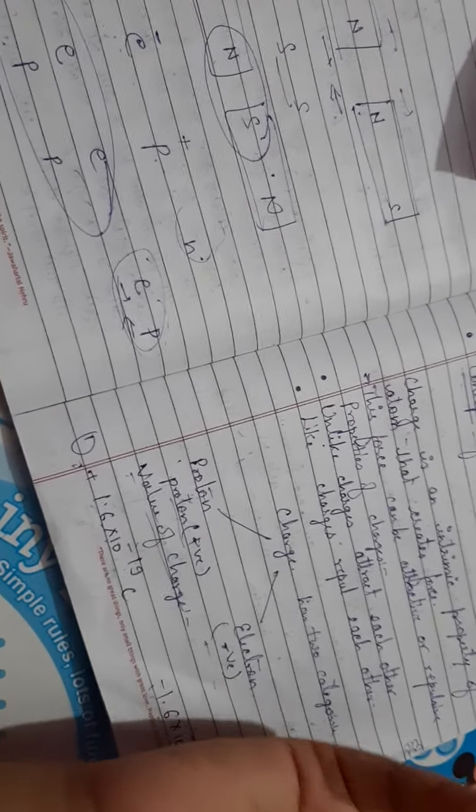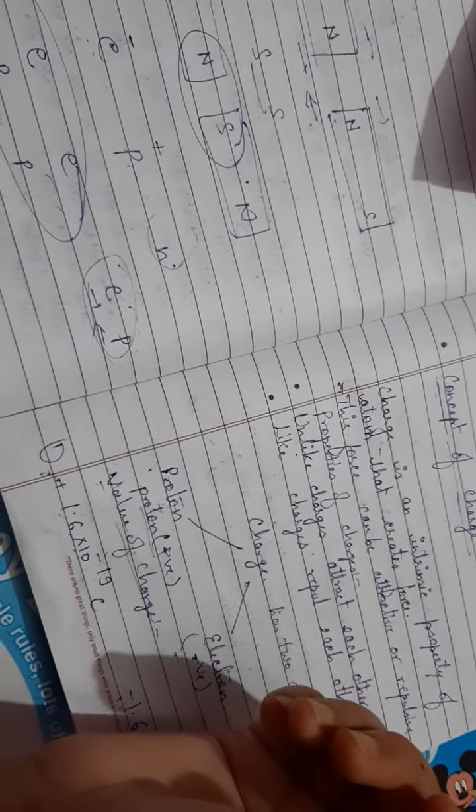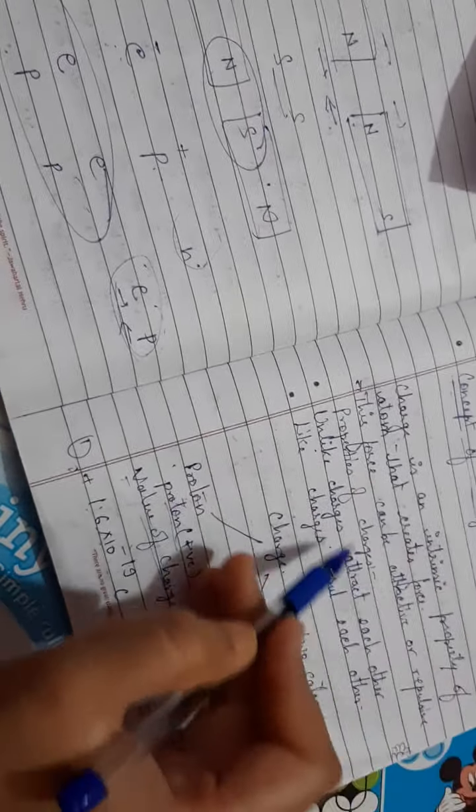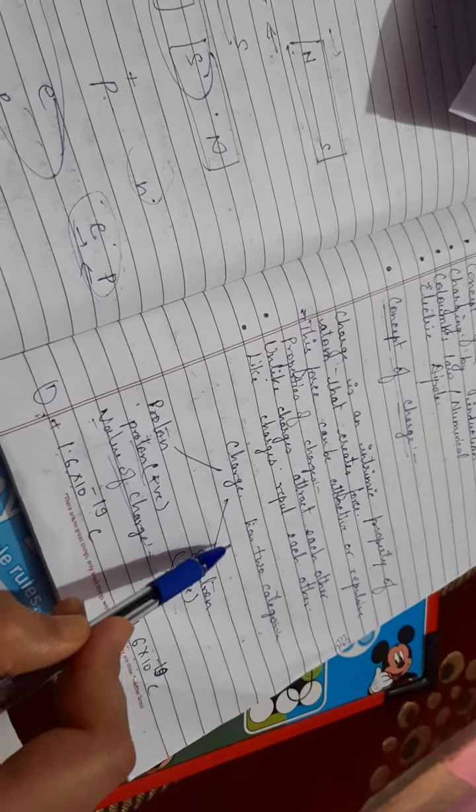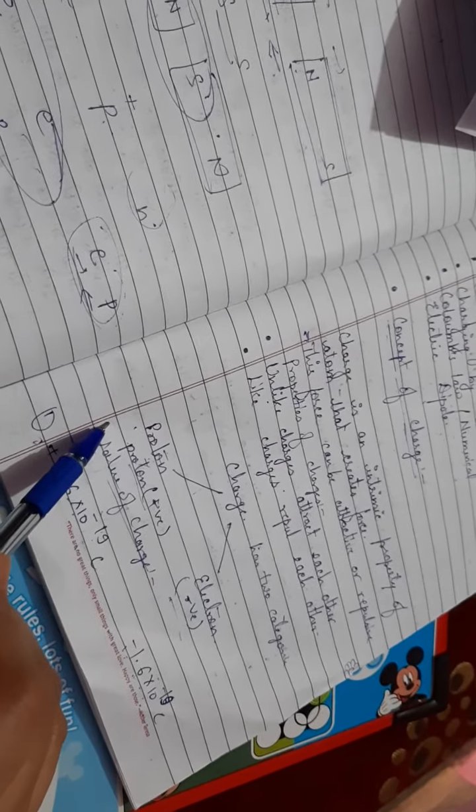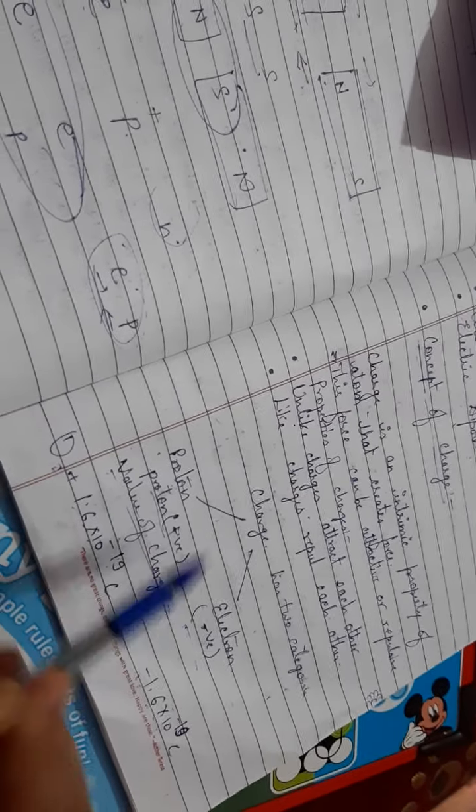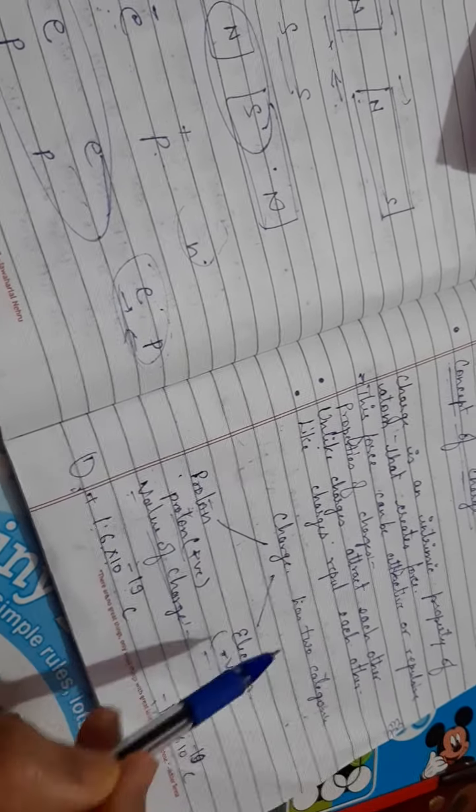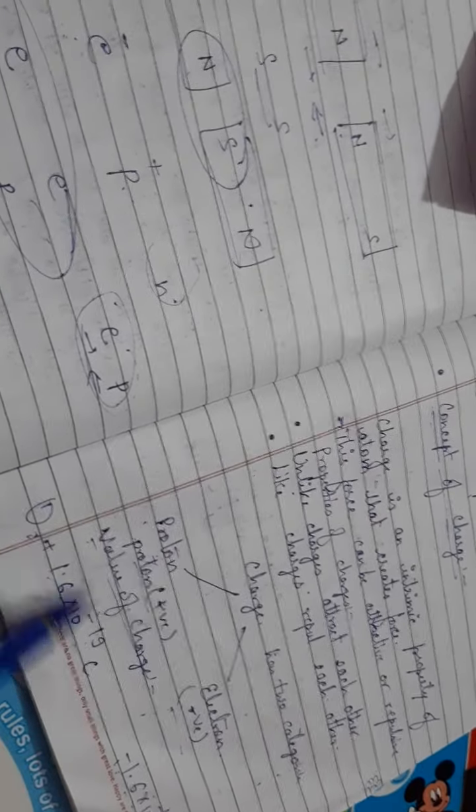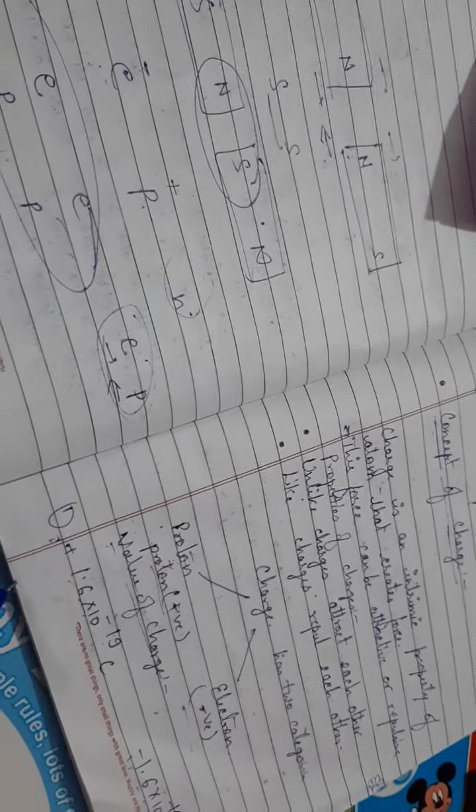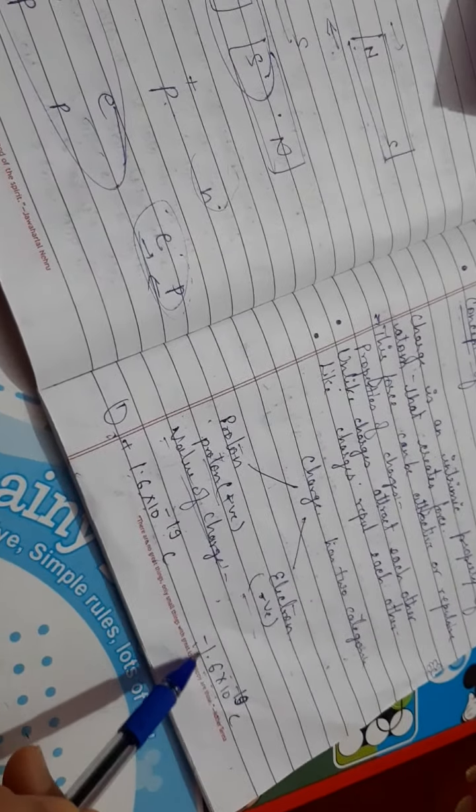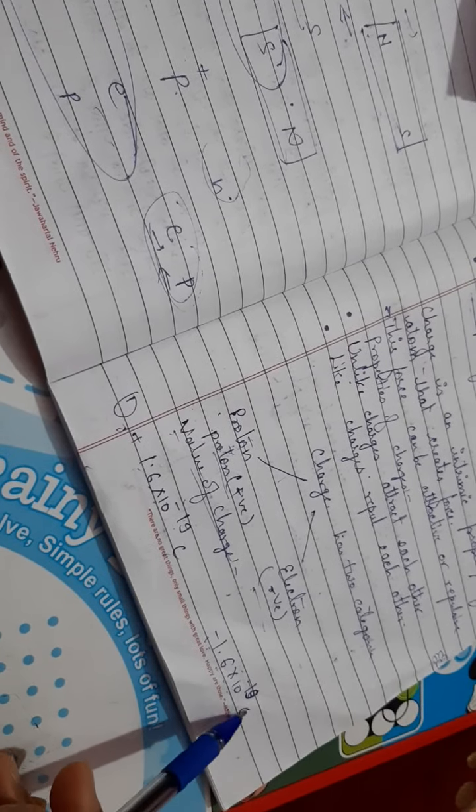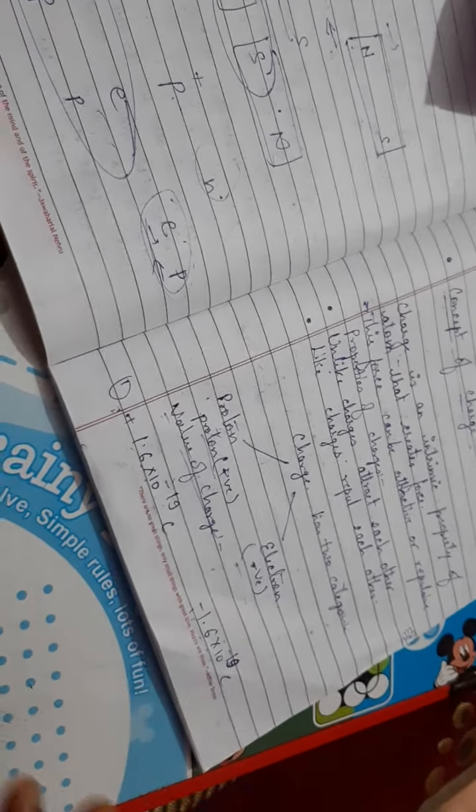The force is attractive when we take unlike charges, and repulsive when we take like charges. Unlike charges attract each other and like charges repel each other. Charge has two categories: positive and negative. Positive charge means proton, negative charge means electron. The value of charge for proton is +1.6 × 10^-19 coulomb, and for electron it is -1.6 × 10^-19 coulomb.